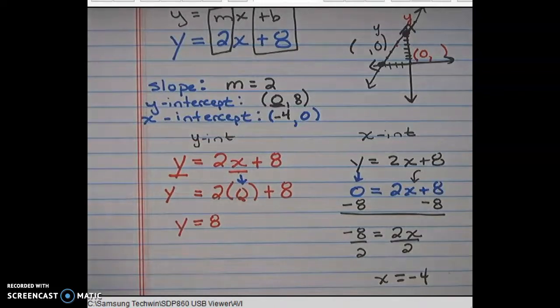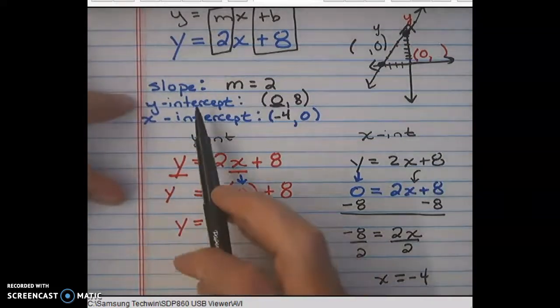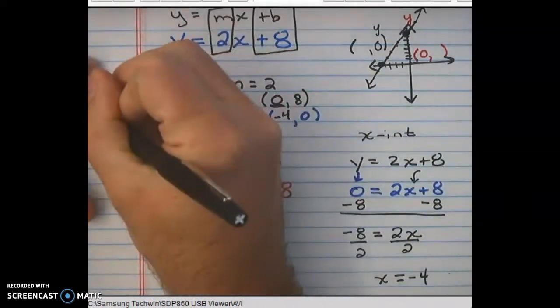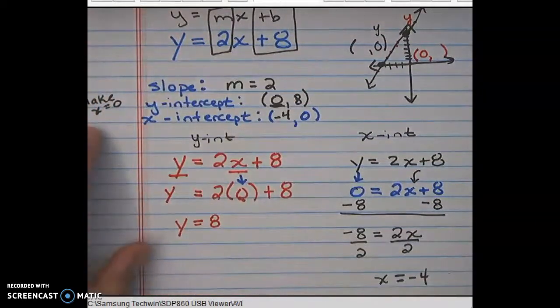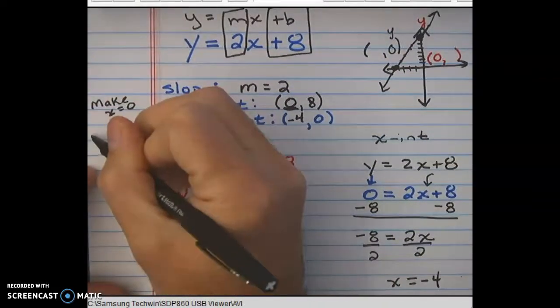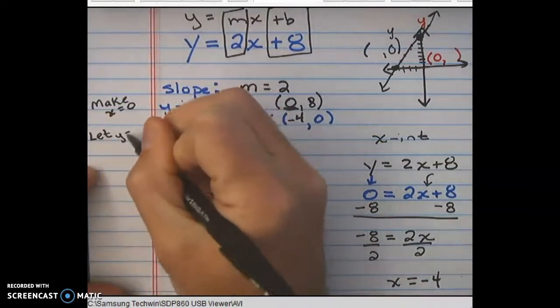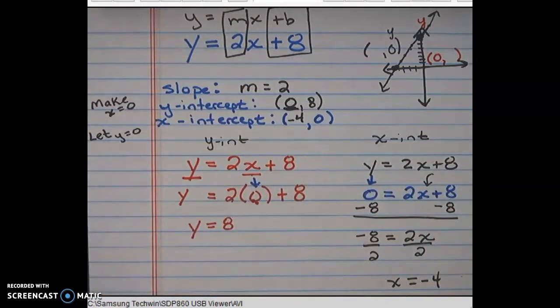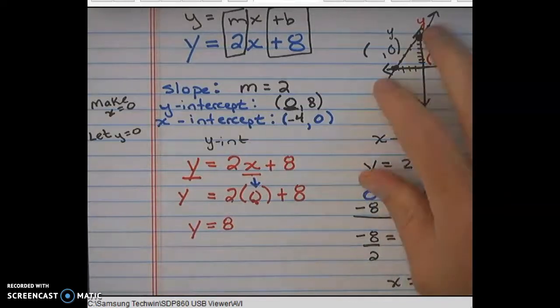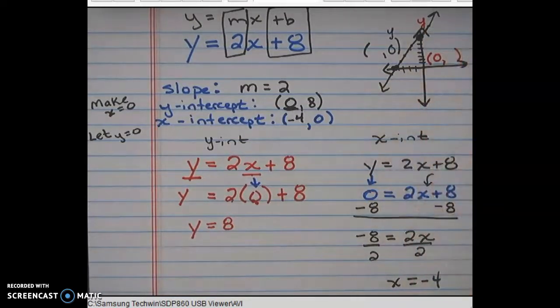So just quickly to review, to find a y-intercept, we make x equal to 0. When we want to find an x-intercept, we let y equal 0 and solve it. So in the equation, we can just plug in 0 for different coordinates to figure out what the other ordered pair coordinate is going to be. So this is an example of the first one, so hopefully it made sense. And if not, you can just plug in those answers.